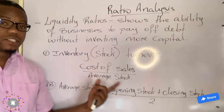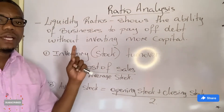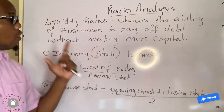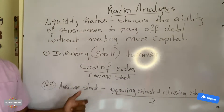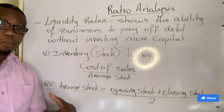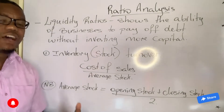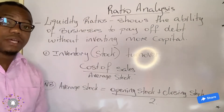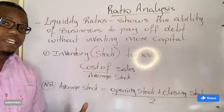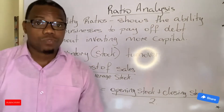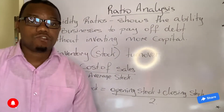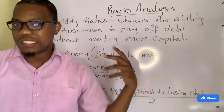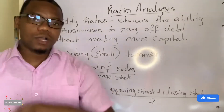We are still on ratio analysis, looking at the second type of ratios — liquidity ratios. Liquidity ratios show the ability of businesses to pay off their debt without having to invest additional capital. You want your business to be able to stand on its own. These ratios are also important, but obviously not as important as the profitability ratios.